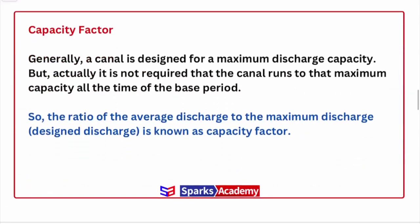Now the most confusing part — capacity factor, time factor, and outlet factor. These terms appear regularly in questions. As civil engineers, when we design canals, we go for maximum discharge capacity. For example, if we need 100 cubic meters of discharge, we design accordingly. But throughout the season or year, maintaining that maximum discharge at all times is not practically possible — in summer we may be insufficient, and in flood/rainy season there are chances of excess.